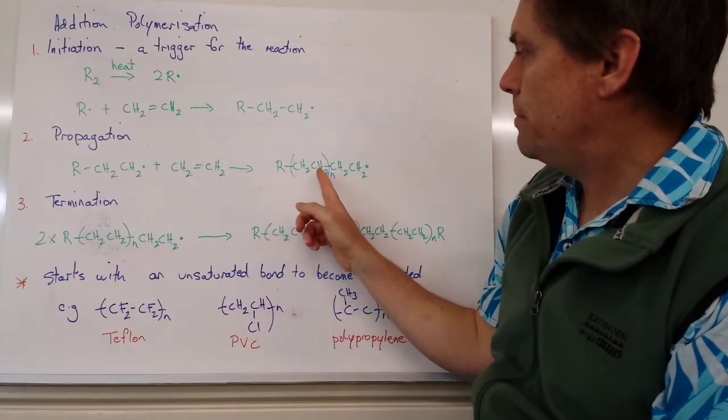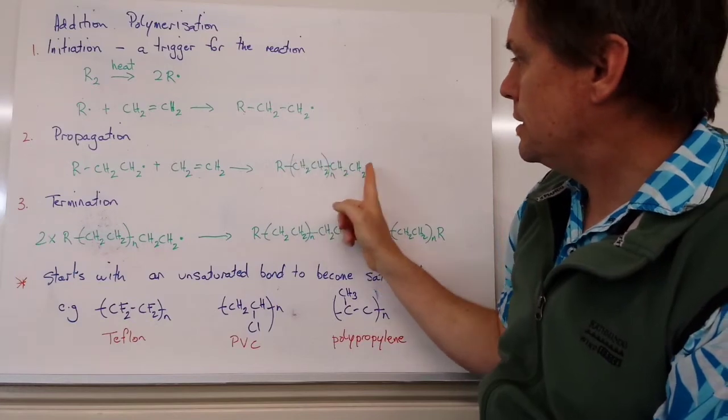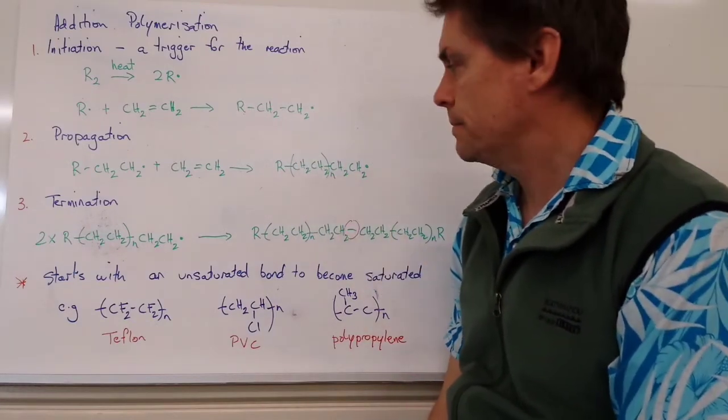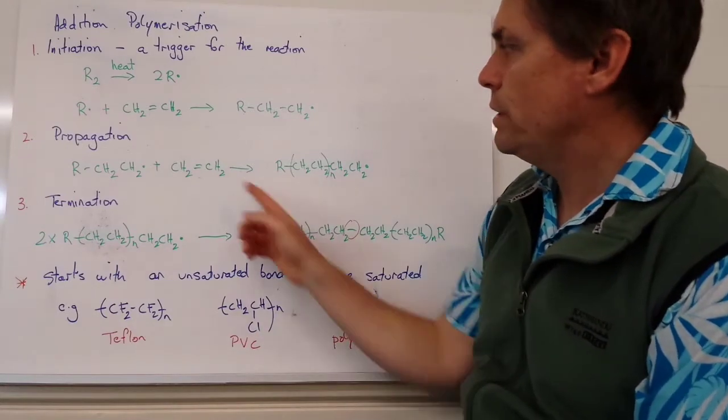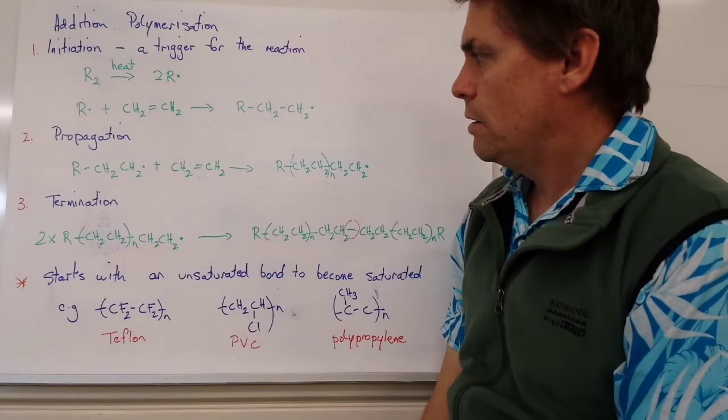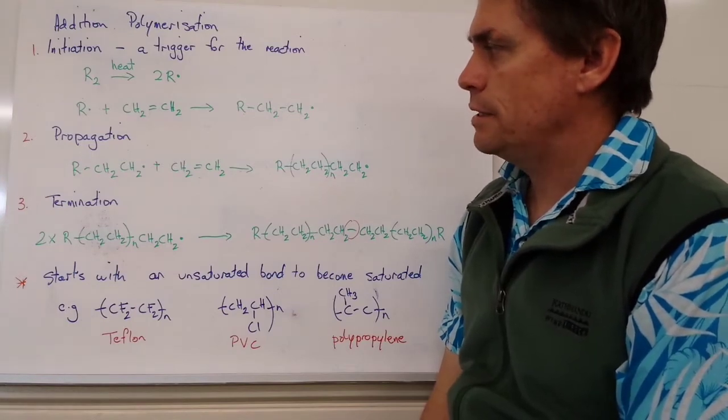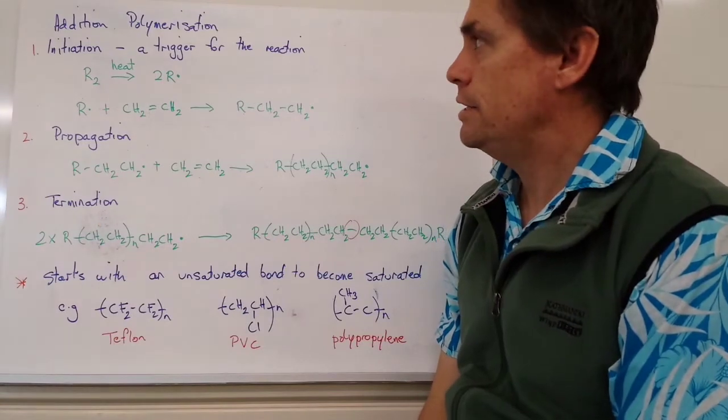And once again, our radical that started at this end is extended out to the end of the chain. Now this process can keep going and keep going until we run out of ethene.